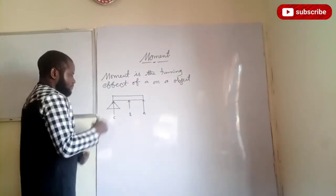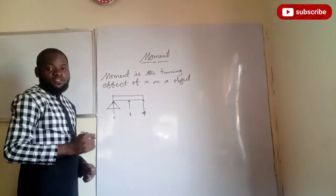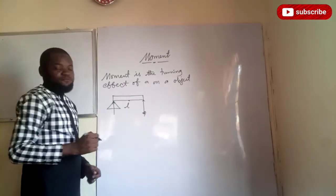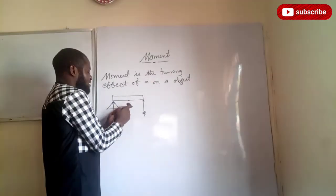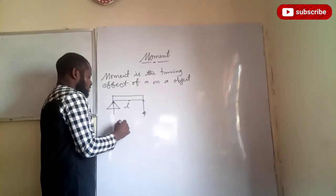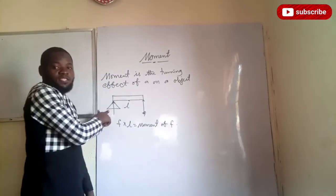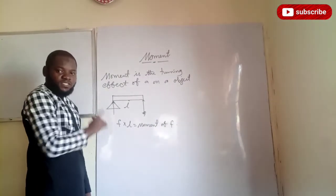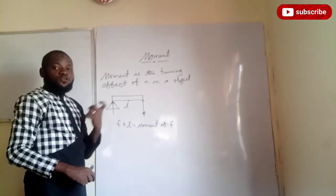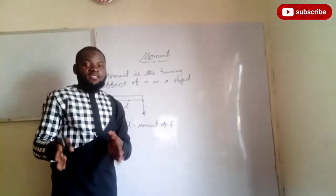Let's take for instance that this is the fulcrum — the axis of rotation. Here is the force applied to the body. From here to this place is the perpendicular distance, because this force is acting vertically and this distance is perpendicular to this force. So the product of F and L is what we refer to as the moment of F about the axis of rotation. Once the distance is not perpendicular, moment is equal to zero.